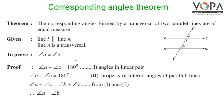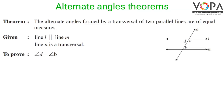This means when lines are parallel, corresponding angles are of equal measure. Alternate angles theorem: the alternate angles formed by a transversal of two parallel lines are of equal measure. We are given line L parallel to line M, and line N is a transversal. We have to prove that angle D is equal to angle B.